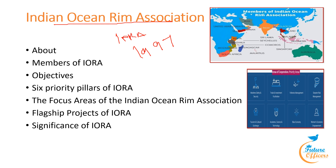The 23 member states include Indian Ocean Rim nations. Dialogue partners include China, Egypt, Germany, Italy, Japan, Republic of Korea, Russia, Turkey, the United Kingdom and the United States of America. Specialized agencies include the Regional Centre for Science and Technology Transfer based in Tehran, Iran, and the Fisheries Support Unit based in Muscat, Oman. Observers include the Indian Ocean Research Group and the Western Indian Ocean Marine Science Association.